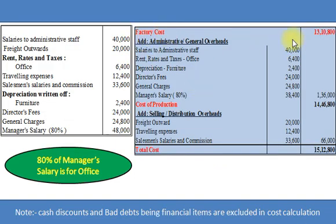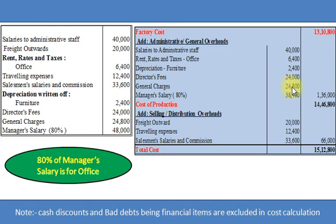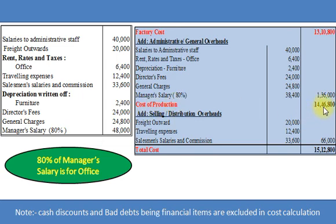Now we add administrative or general overheads to factory cost of Rs. 13,10,800. These are: Salary to Administrative Staff Rs. 40,000; Office Rent, Rates and Taxes Rs. 6,400; Depreciation on Furniture Rs. 2,400; Director Fees Rs. 24,000; General Charges Rs. 24,800; and Manager's Salary 80% of Rs. 48,000 = Rs. 38,400. Total Administrative Overheads Rs. 1,36,000. Adding this gives Cost of Production Rs. 14,46,800.